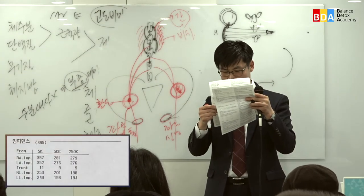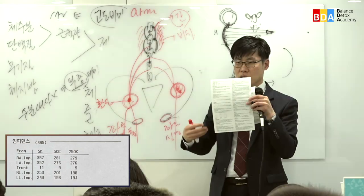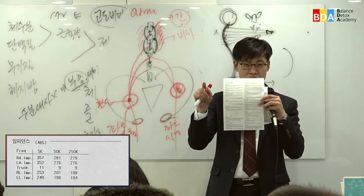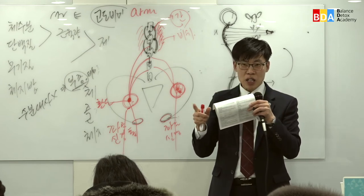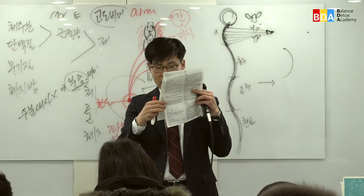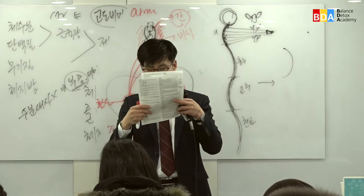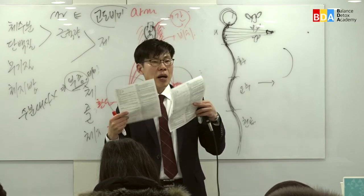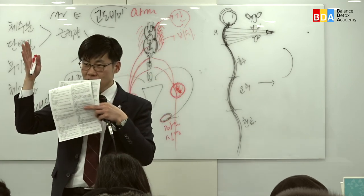임피던스가 있습니다. R.A는 오른쪽 팔, L.A는 왼쪽 팔, 트렁크는 몸통, R.L은 오른쪽 다리, L.L은 왼쪽 다리를 말합니다. 임피던스는 전기가 통하는지 안 통하는지를 보는 것으로, 전기가 안 통하면 지방, 통하면 근육입니다. 수치가 많은 게 좋은 게 아니라 균형이 중요합니다. 수치가 낮으면 지방이 많은 것이고, 높으면 근육이 많은 것입니다.